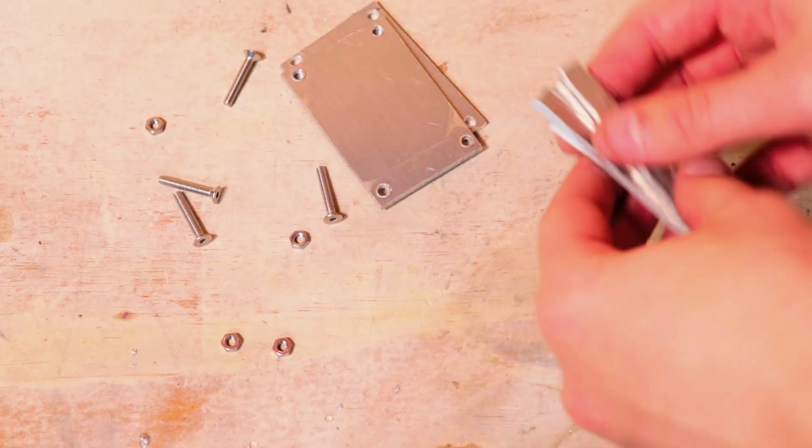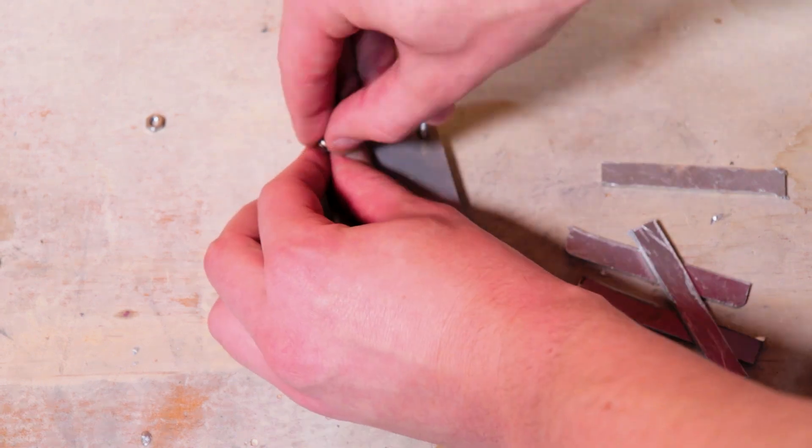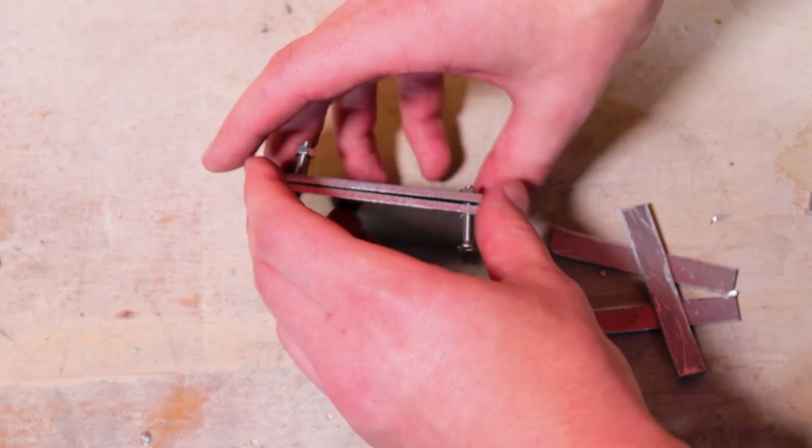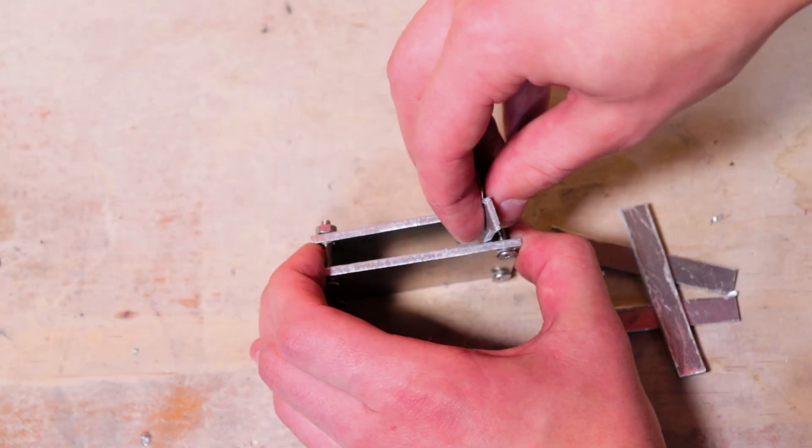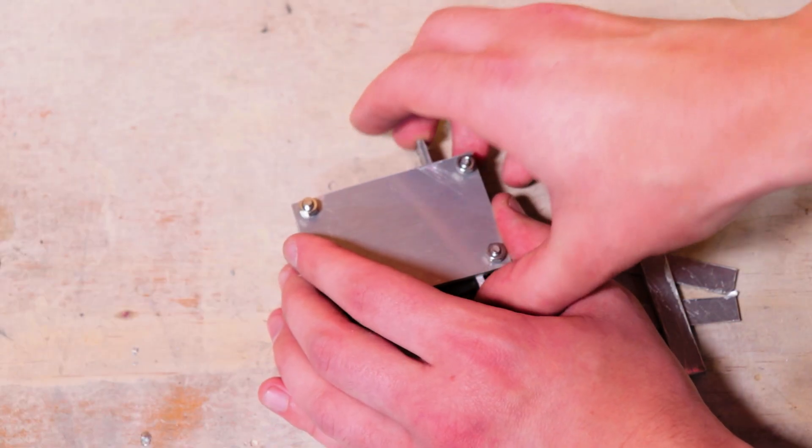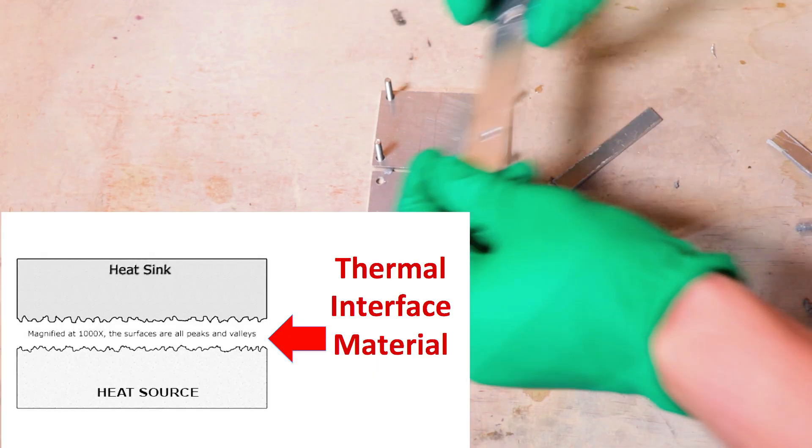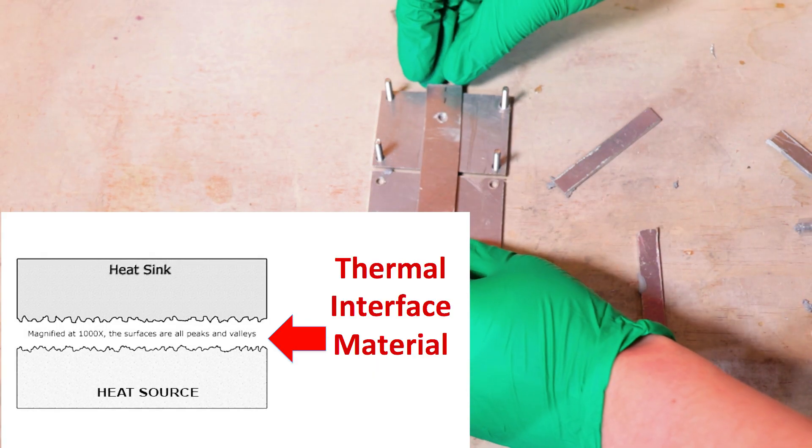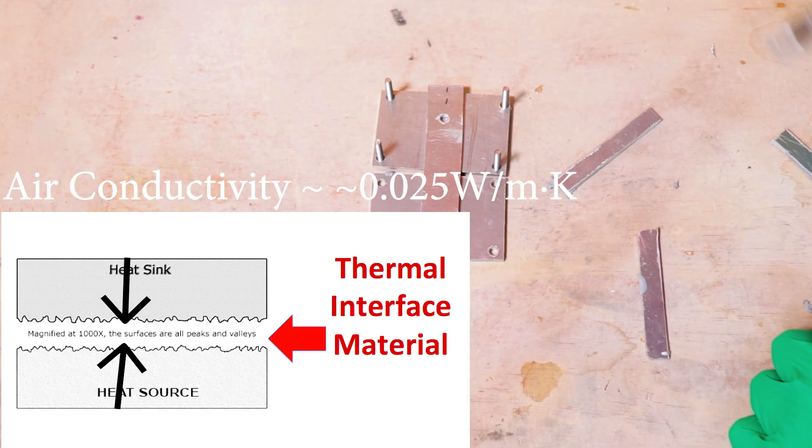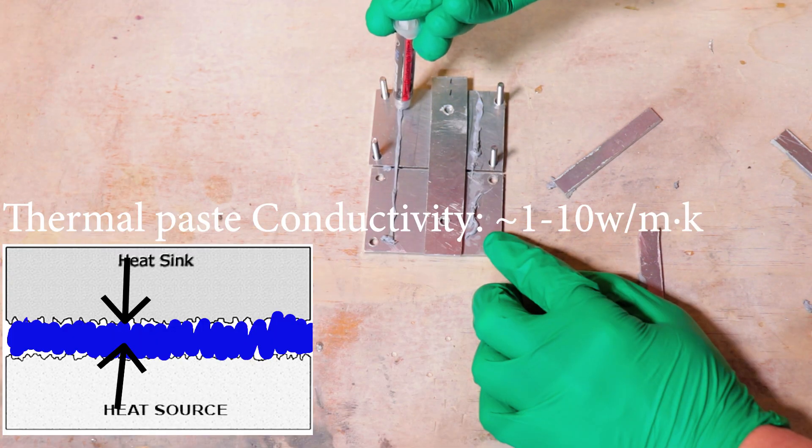Once everything's been cut and drilled, I did a quick dry fit to see how everything lines up. However, before I add the fins, I'm going to want to add a layer of thermal paste, since even though the surface might look really smooth, if we were to zoom in microscopically, there's actually a bunch of little tiny air gaps. This is a problem, since the conductivity of air is not that good, but if we could fill it with something more conductive, we would greatly improve the rate of heat transfer.